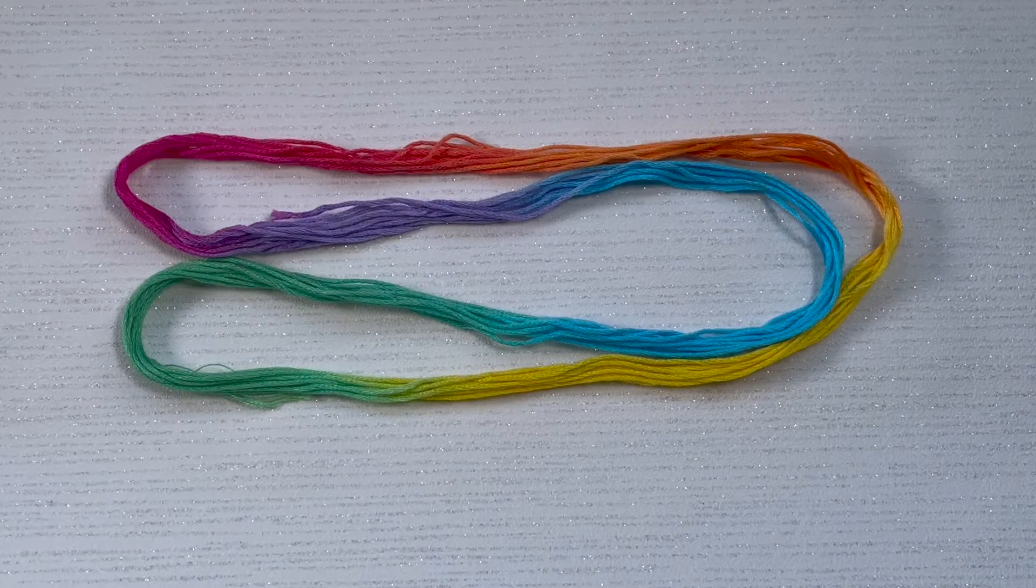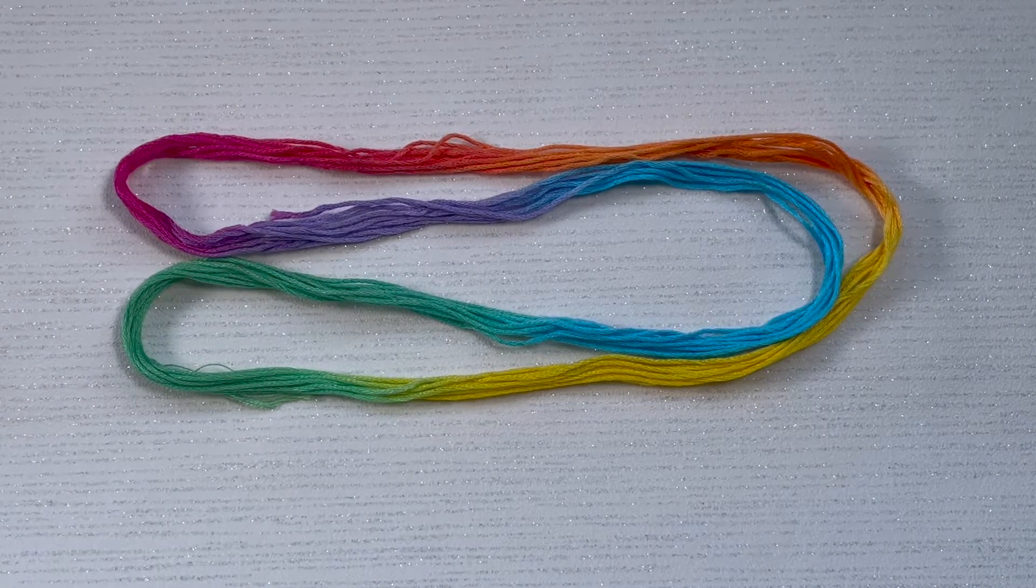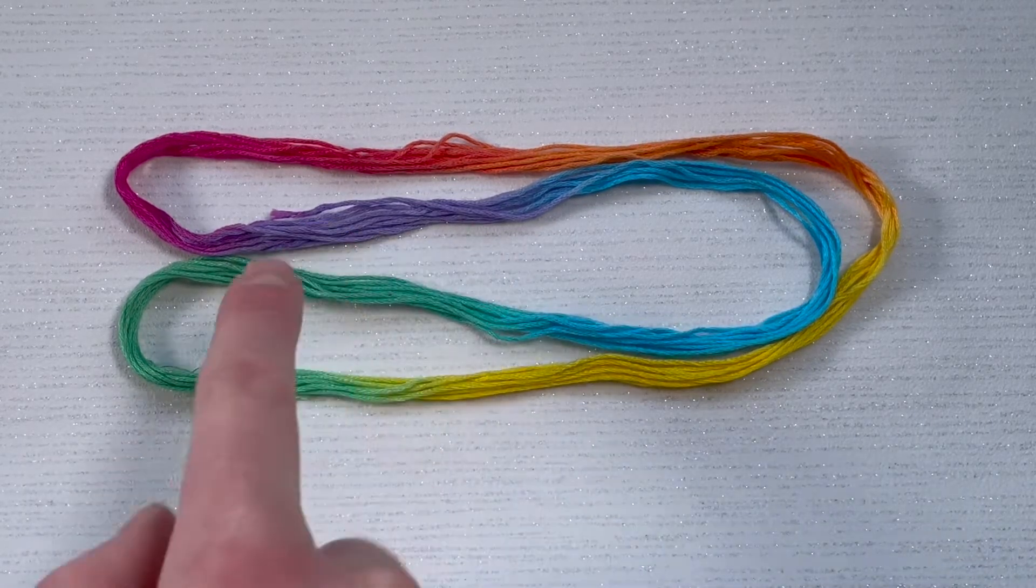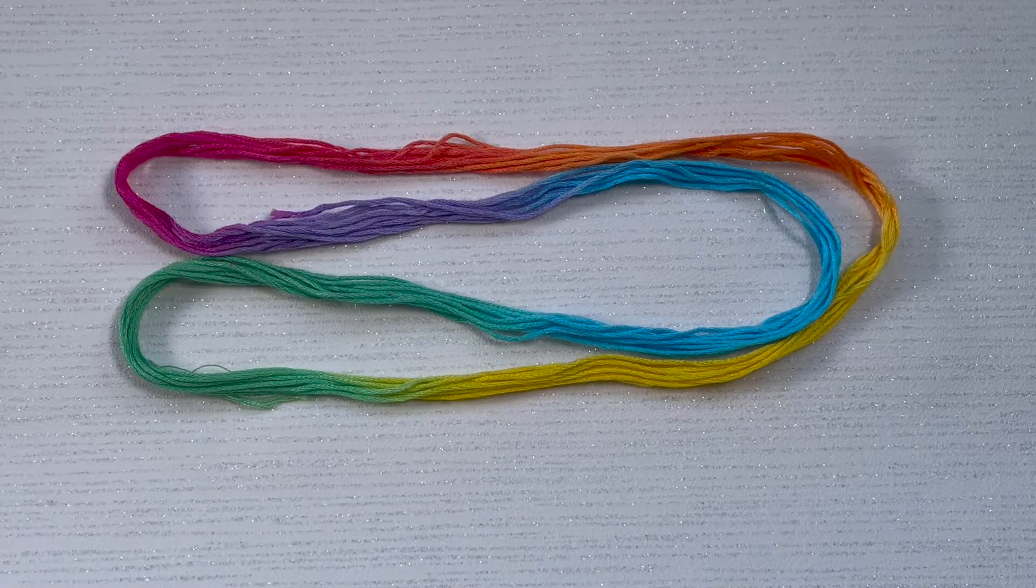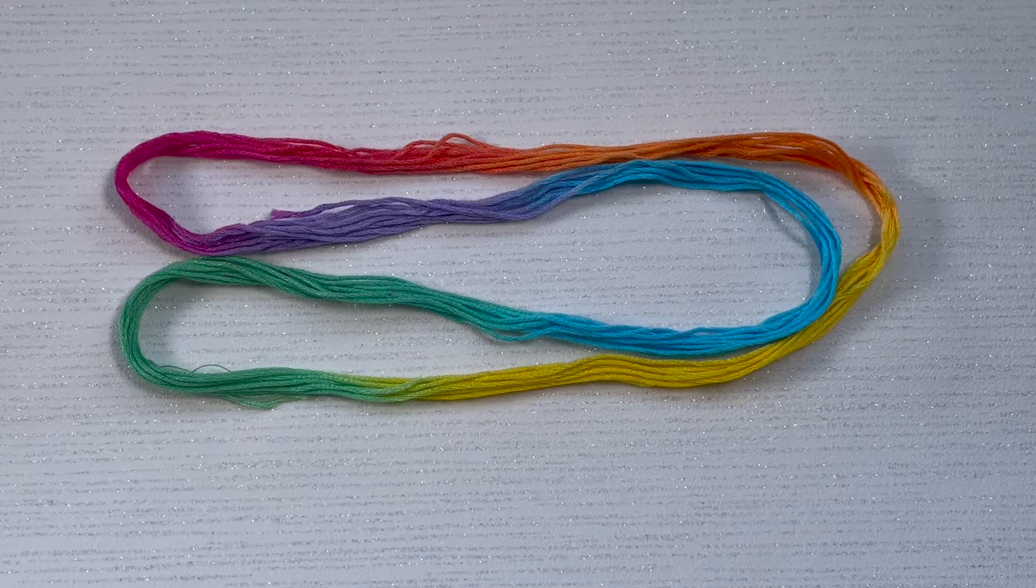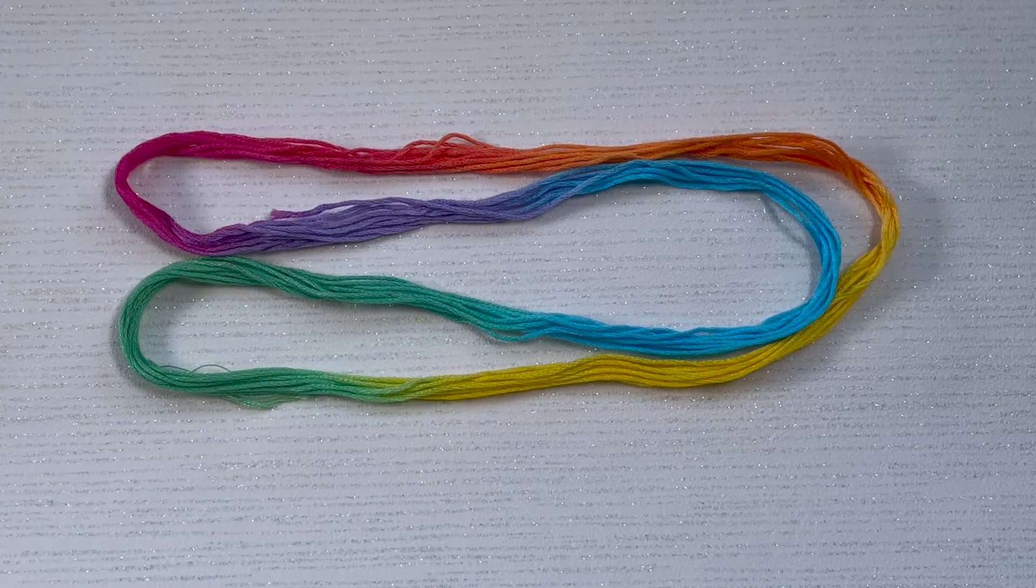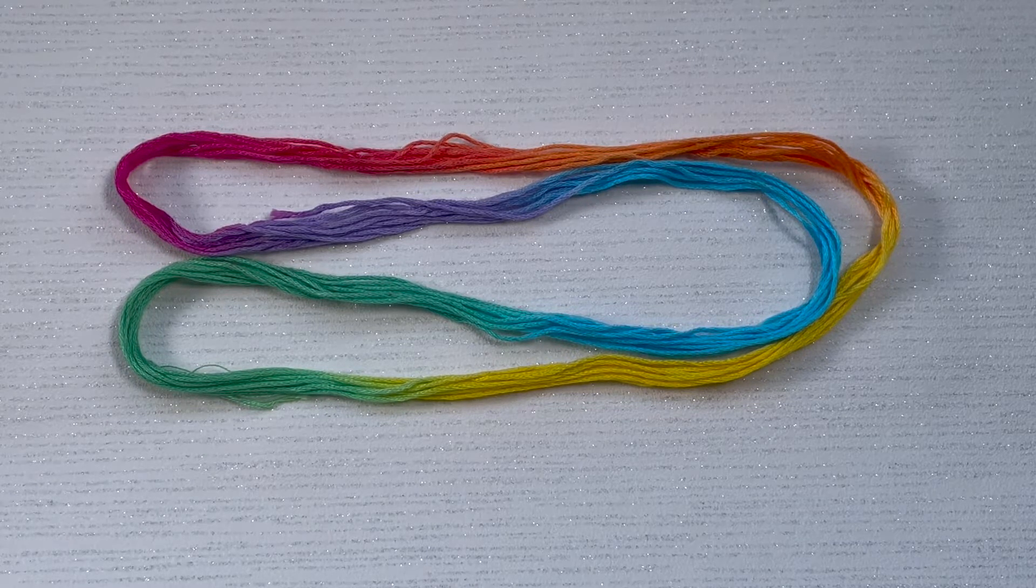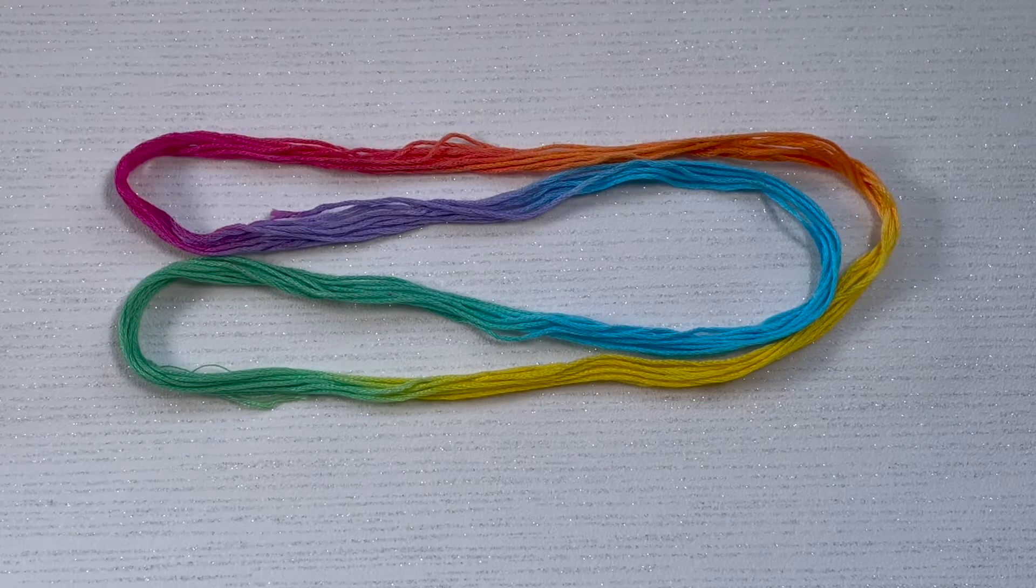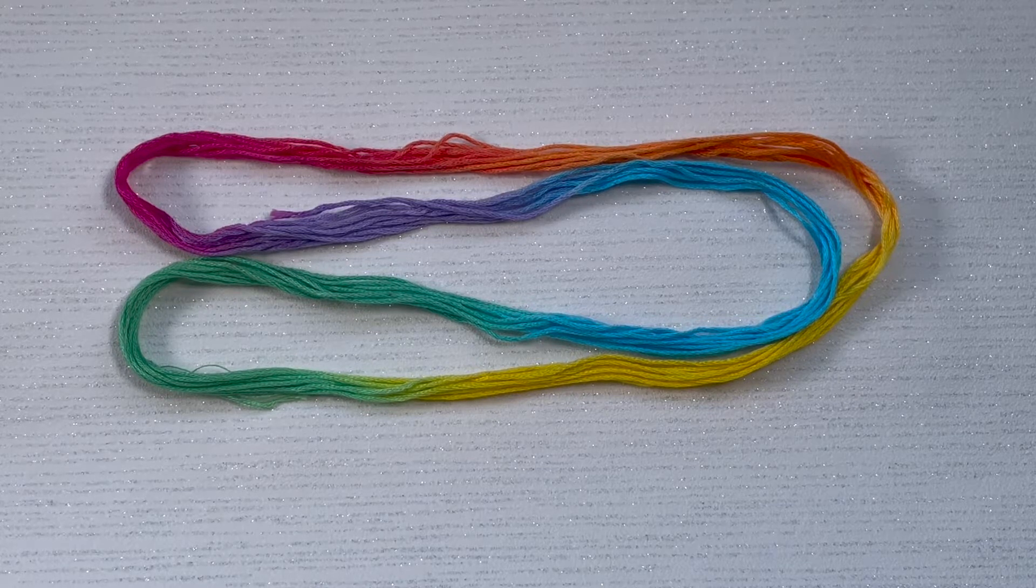And here is our beautiful rainbow floss. Now, I know I did go a little bit overboard with the turquoise and the yellow. Those sections are quite big. And that purple section is really, really tiny. But I'm not disappointed. I'm really happy with this. I quite like the randomness of the lengths. And I will dye this again. And I will use my hexagon jar, which I have used before, so that each color is the same length.